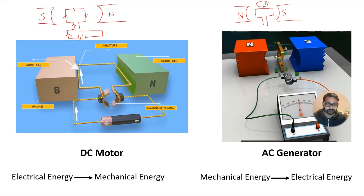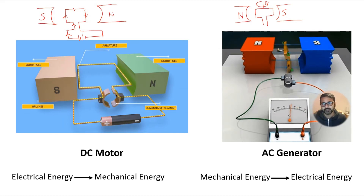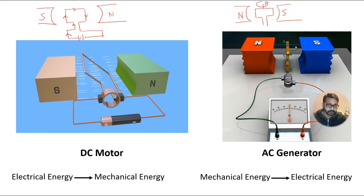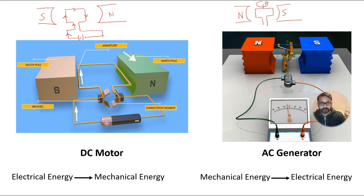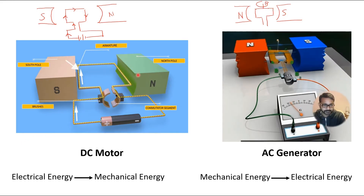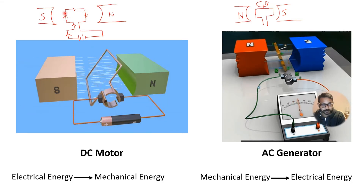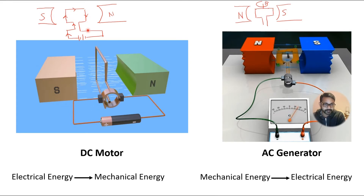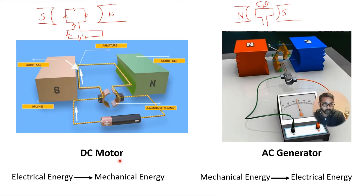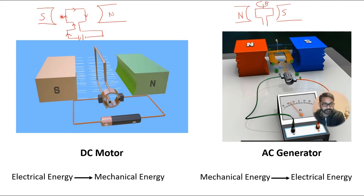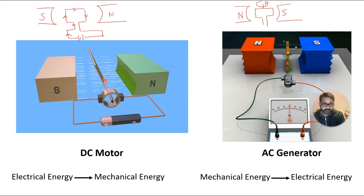Coming back to things discussed in the previous class, we already discussed the working principle of a DC motor. In a DC motor, we have a current-carrying conductor placed in a magnetic field between two magnets. This conductor experiences a force, and based on this principle we developed the DC motor. If we have a square coil or rotor carrying current in a magnetic field, it will start to rotate, as you can see in the video.